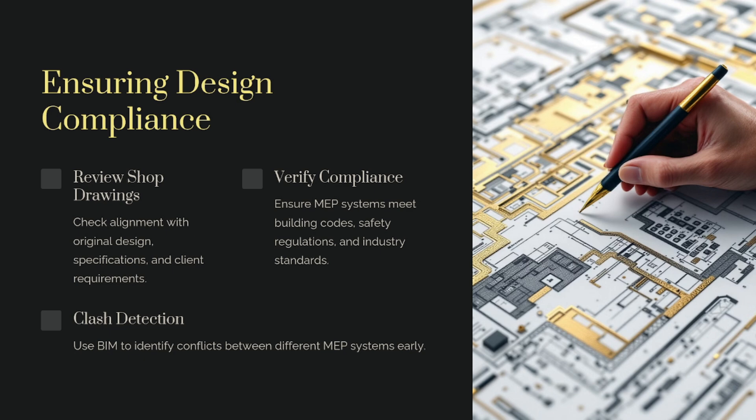The next point is verifying compliance. During installation, as an MEP QAQC engineer, you need to ensure that all MEP systems comply with building codes, safety regulations, local standards, and industry standards. How can you identify these? You need to review the project specifications, material submittals, and material codes — from there you get to know what the codes are for that system.